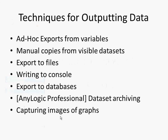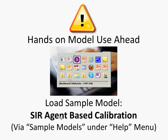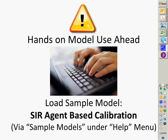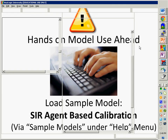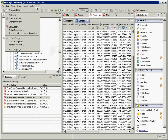Let's talk about techniques for outputting data. I'd like you to open a model called SAR Agent-Based Calibration. This model can be found under the Help menu — Help and Examples — within AnyLogic. We're going to come back to this model for several successive lectures: this one on model output, then sensitivity analysis, stochastics, and calibration.